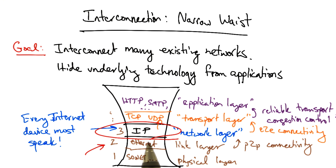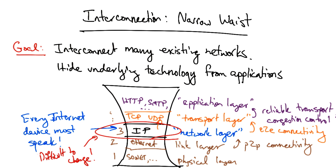The advantage of the narrow waist is that it's fairly easy to get a device on the network if it runs IP. But the drawback is that because every device is running IP, it's very difficult to make any changes at this layer. However, people are trying to do so, and later in the course, when we discuss software-defined networking, we will explore how various changes are being made to both the IP layer and other layers that surround it.